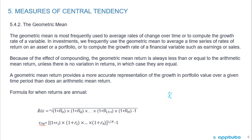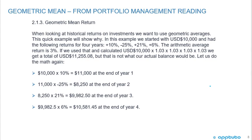A geometric mean return provides a more accurate representation of the growth in a portfolio value over a given time period than does an arithmetic mean return. The formula for when returns are annual is going to be (1 + R1) × (1 + R2) × (1 + R3) to the nth root. Or we can rewrite it as to the power of 1/n.